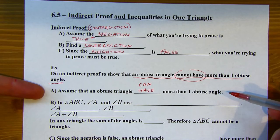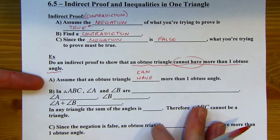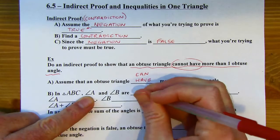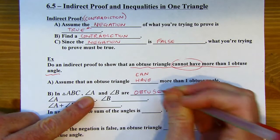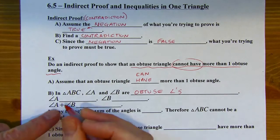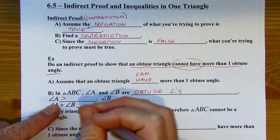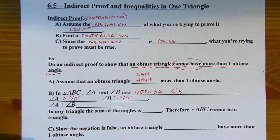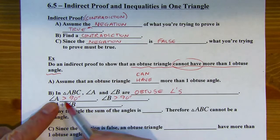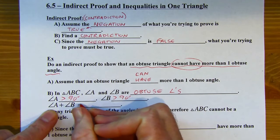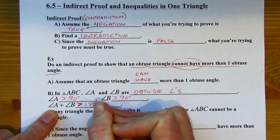Let's think through what would happen if a triangle had more than one obtuse angle. In triangle ABC, let's say angle A and angle B are both obtuse angles. That means angle A has a measure of more than 90 degrees, and so will angle B — that's what makes them obtuse angles. So if angle A and angle B are both more than 90 degrees, when I add them together, their sum is going to be more than 180 degrees.